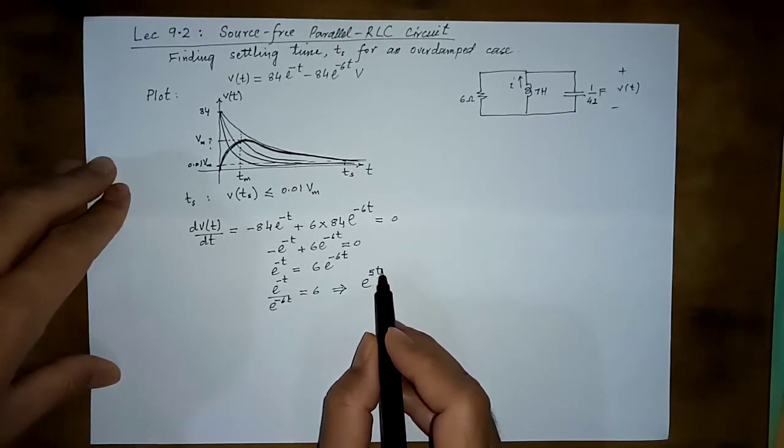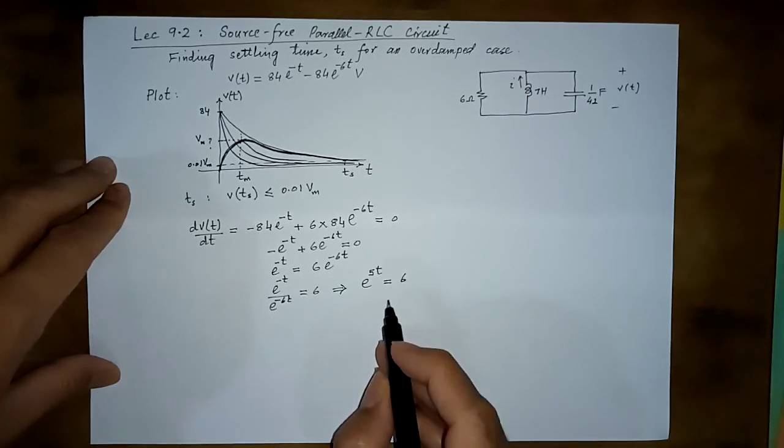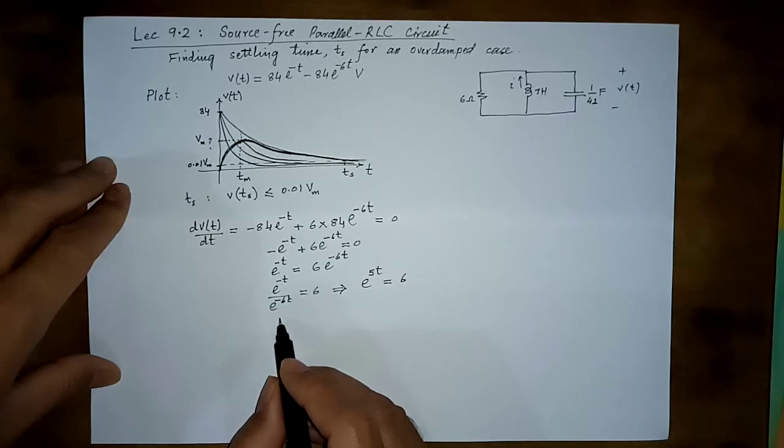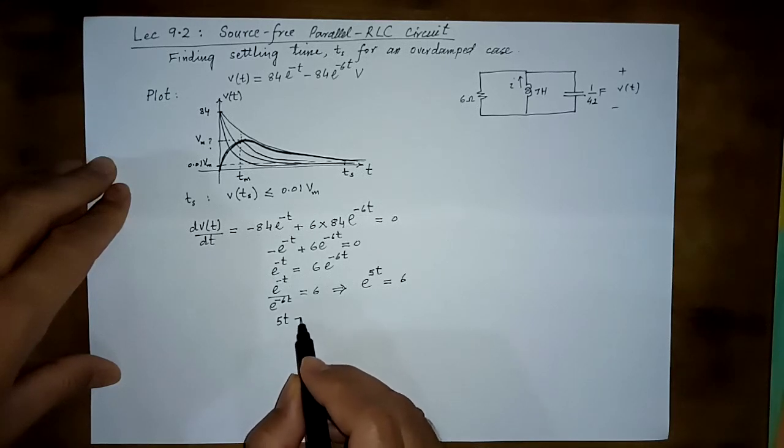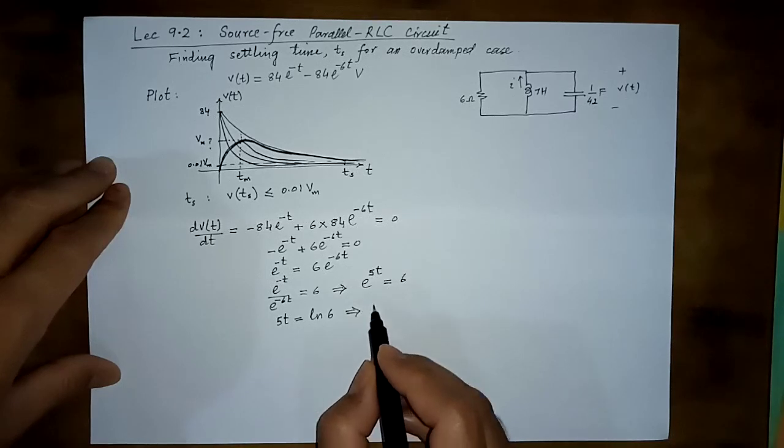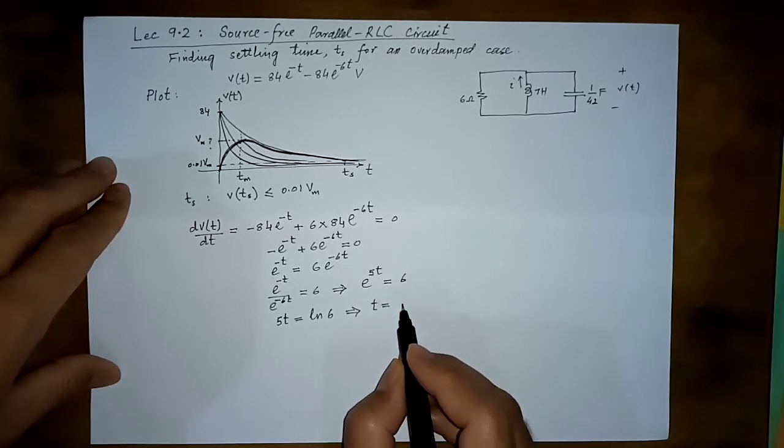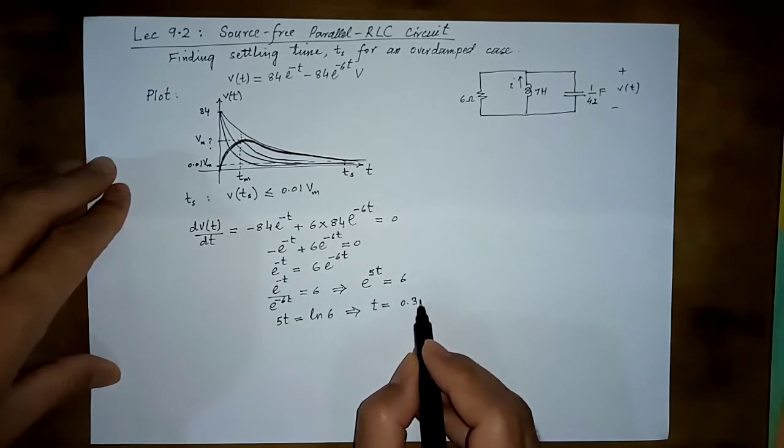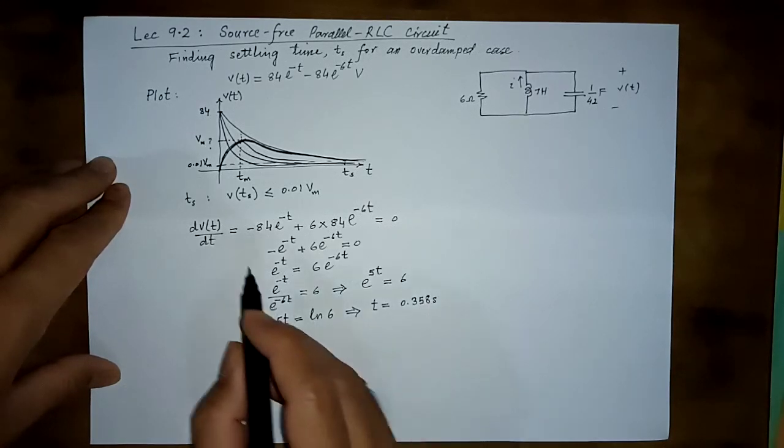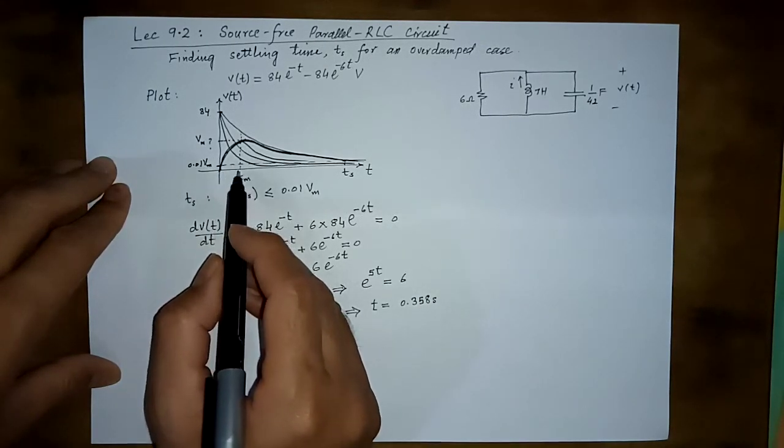That gives e raised power 5t is equal to 6. So taking the natural log of both sides is going to give us 5t is equal to natural log of 6, and we can find this. The value will be 0.358 second. So in 0.358 second the max value is achieved.